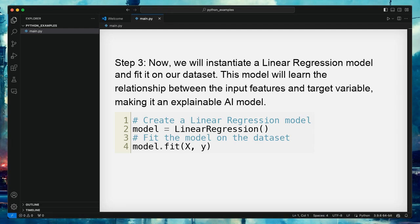Step 3. Now, we will instantiate a linear regression model and fit it on our dataset. This model will learn the relationship between the input features and target variable, making it an explainable AI model.